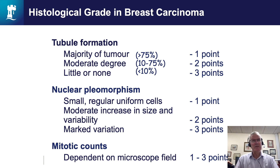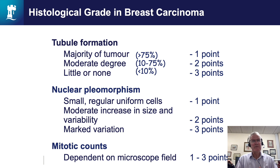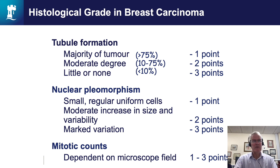We look at tubule formation — those are the glandular structures in the normal breast — and see how well the tumour produces glands. We look at the nuclei in the tumour cells and see how they vary in shape and size. We also look at the frequency of cells in division, that is the mitotic count. Each of those three variables is given a score depending on how abnormal it appears — the more abnormal, the higher the score. For tubule formation, a score of one means abundant glands; a score of three means little or no tubule formation. The same principle applies to nuclear pleomorphism and mitotic frequency.